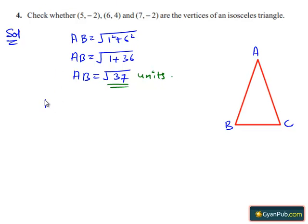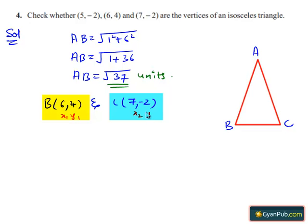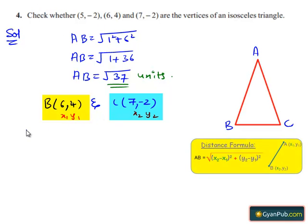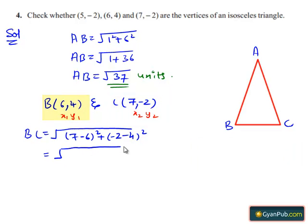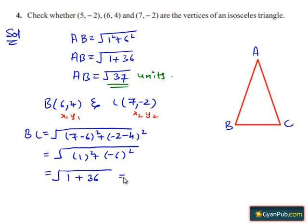Now taking points B(6, 4) as (x1, y1) and C(7, −2) as (x2, y2), substituting the values in the distance formula, we get BC equals under root of (7 minus 6) whole square plus (minus 2 minus 4) whole square, which equals under root of 1 square plus (minus 6) square, equals under root of 1 plus 36, equals root 37. Hence, the length BC is root 37 units.